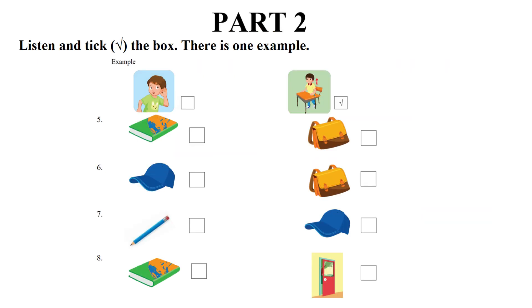Part 2. Listen and tick the box. There is one example. Stand up. Can you see the tick? Now you listen and tick the box.